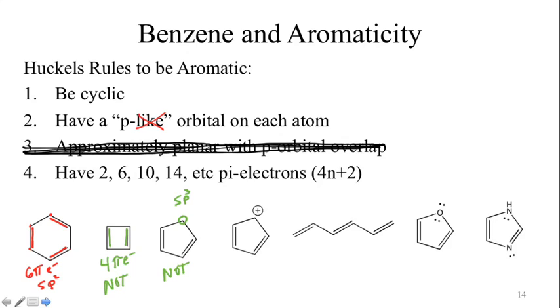We move to the next one. Do we have a p orbital? We look at that again at that carbon. It's sp2 hybridized. We do have that p orbital. So it's cyclic. We have our p orbital. How many pi electrons? Four pi electrons. So not aromatic. We move to the next structure. We've been counting electrons, so the habit might be, oh, yeah, six pi electrons. Great. Aromatic. Remember, all the other rules must be true. Is it cyclic? No. Not cyclic. Not aromatic. I don't care how many pi electrons there are.